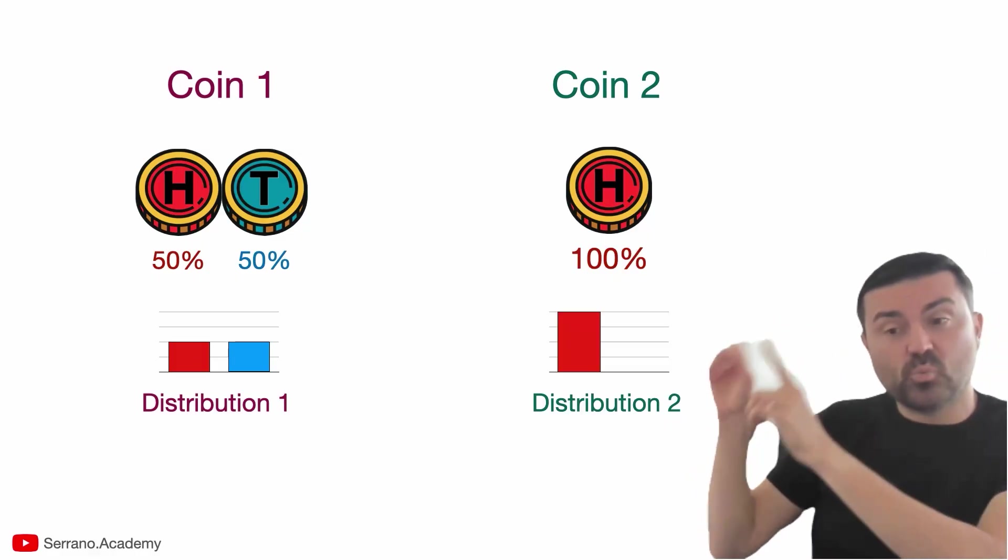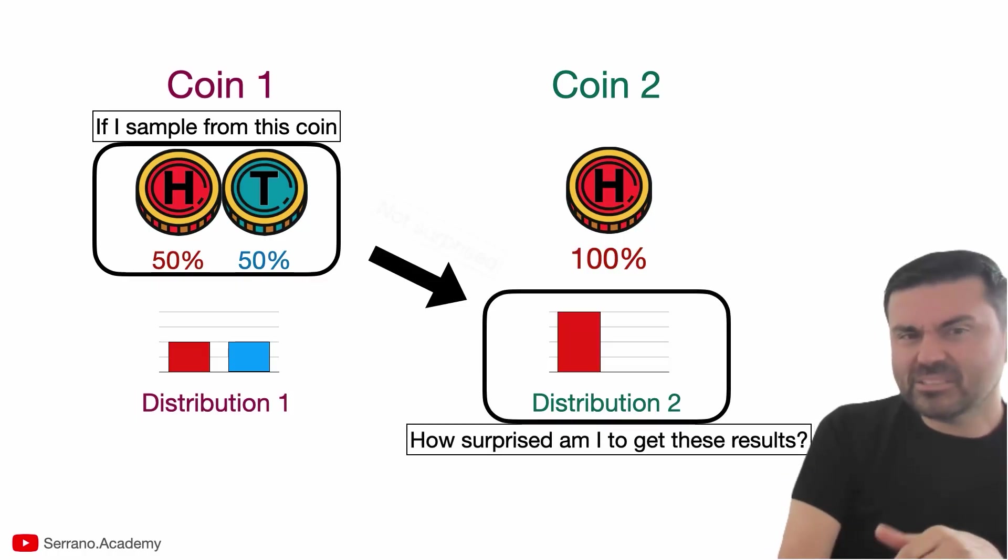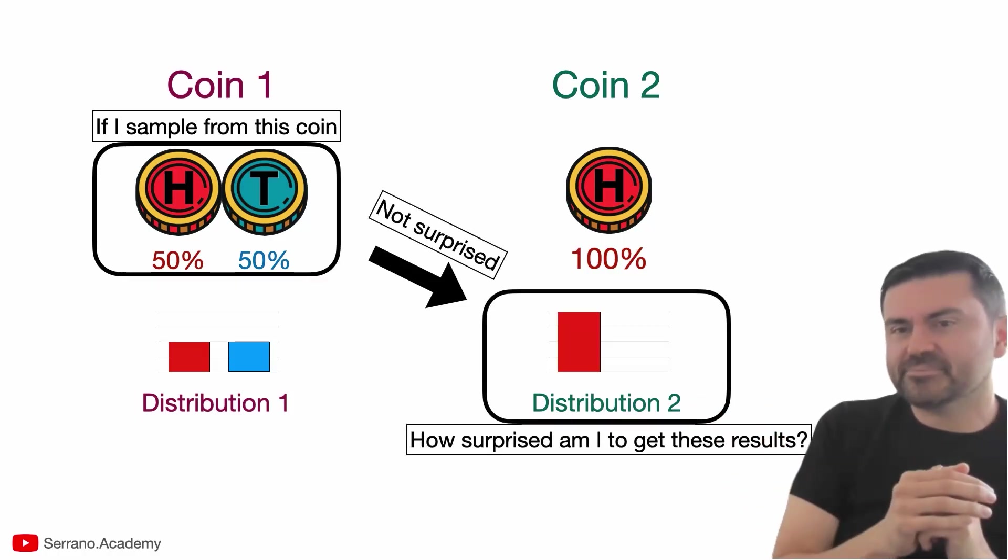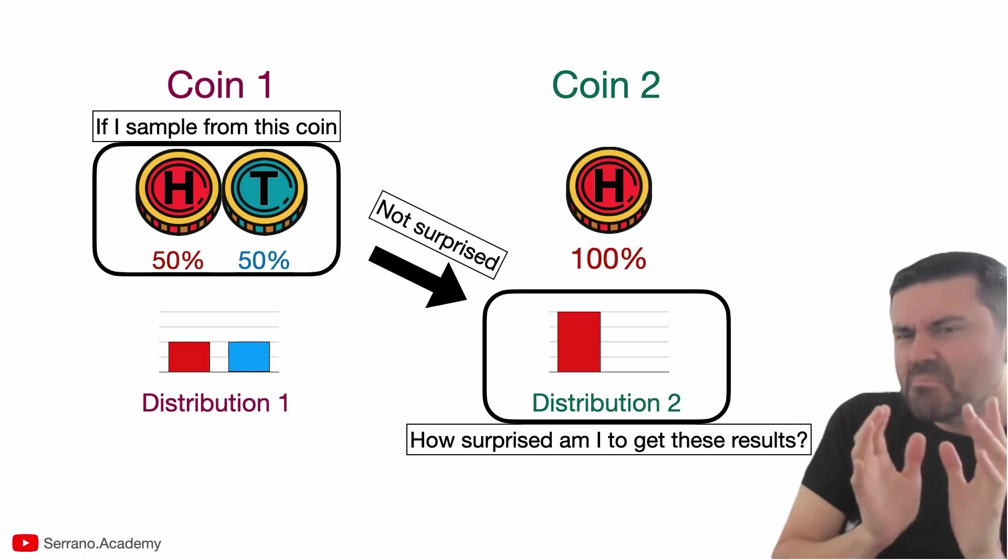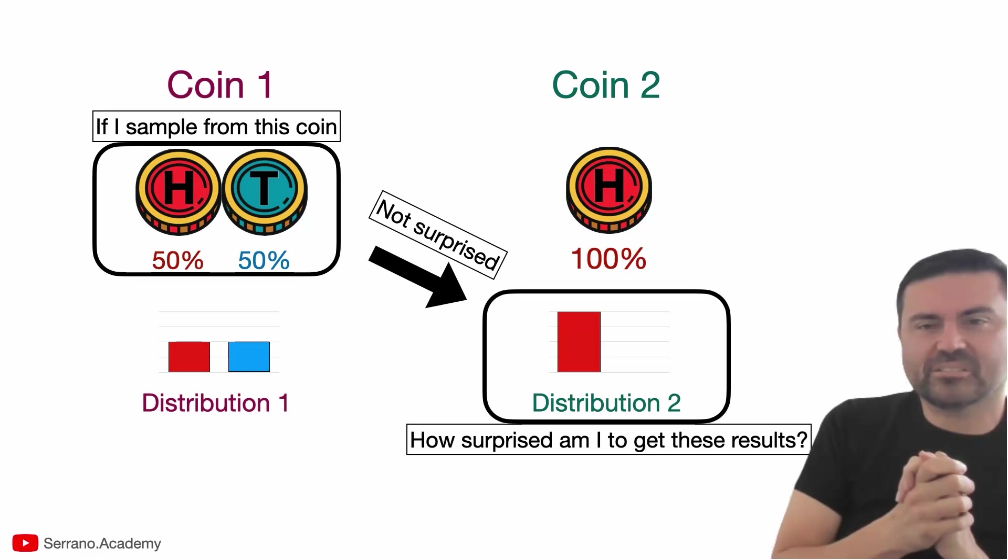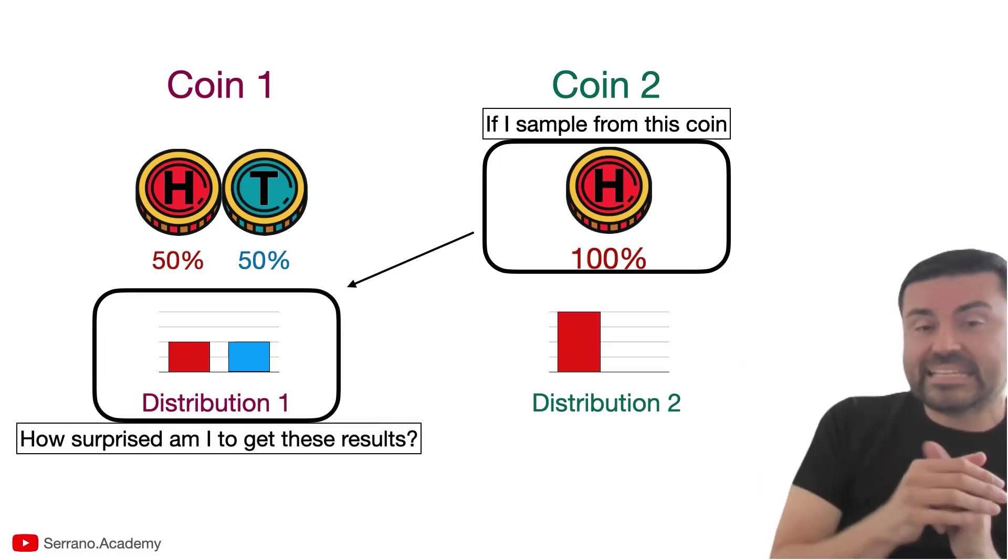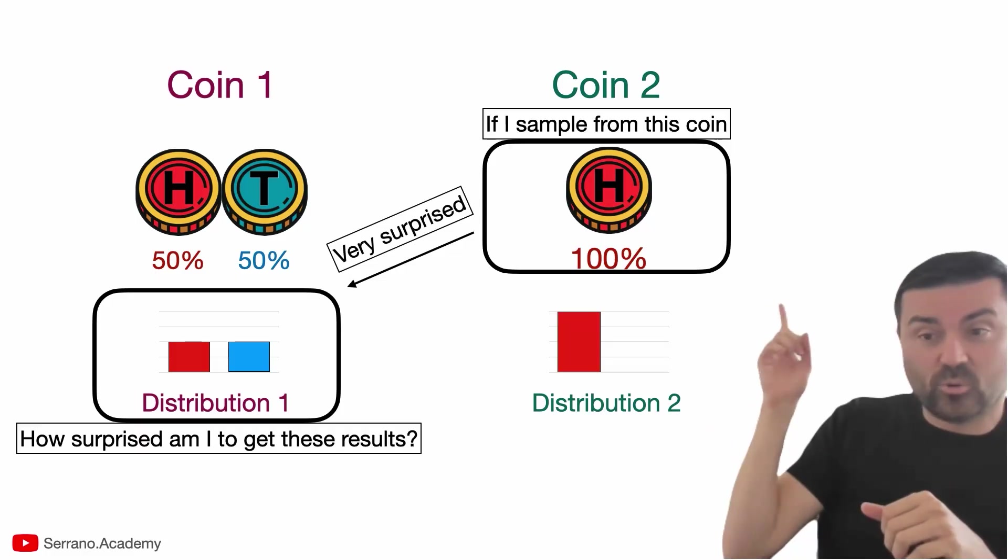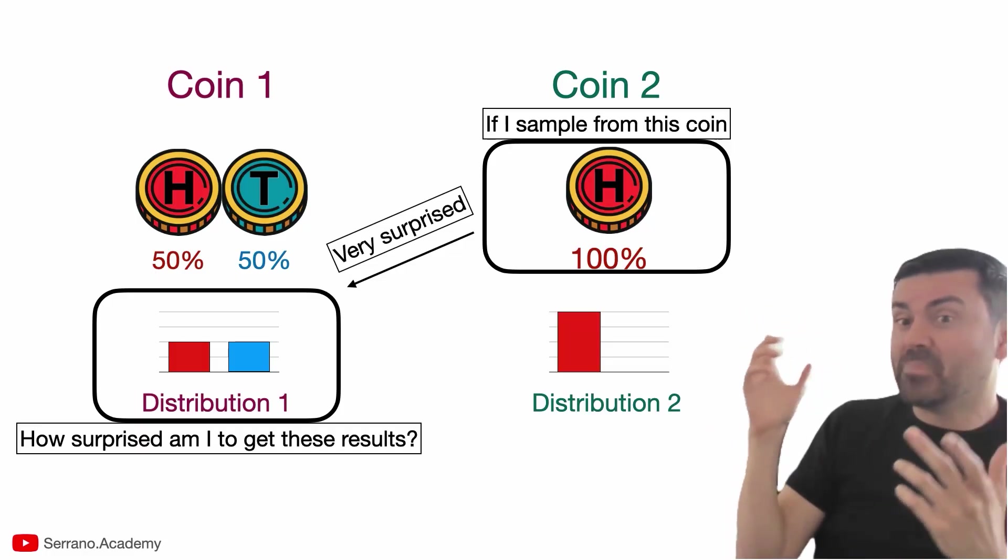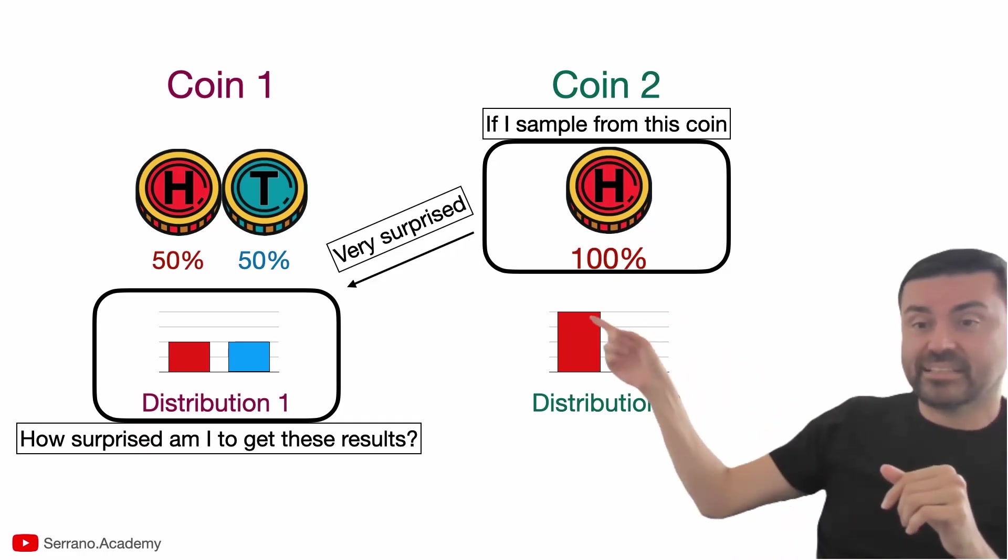So what's the KL divergence between distribution one and distribution two? If I sample out of this, if I flip my fair coin, how surprised am I if it lands on heads? Well, I'm not surprised at all, right? If I flip it once, I'm not surprised. If I flip it more times and it lands in heads a lot, I'd be maybe mildly surprised, but it's still not going to think that it's a bizarre situation. On the other hand, if I flip this coin over here, how surprised would I be if it lands in heads and tails half and half of the time? Well, I would be very surprised because this coin only lands in heads. It'd be actually impossible to get it to land in tails. So the surprise is much bigger in this direction than in the other one.